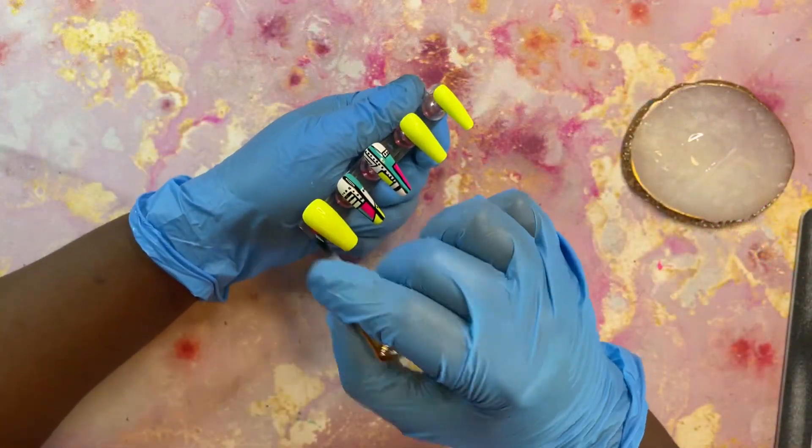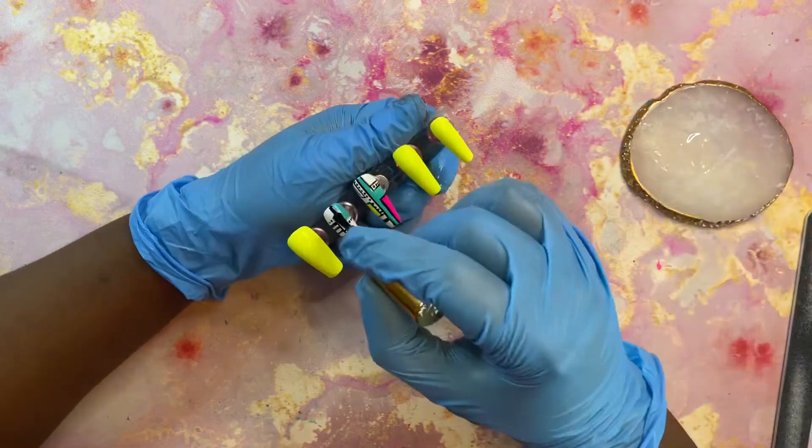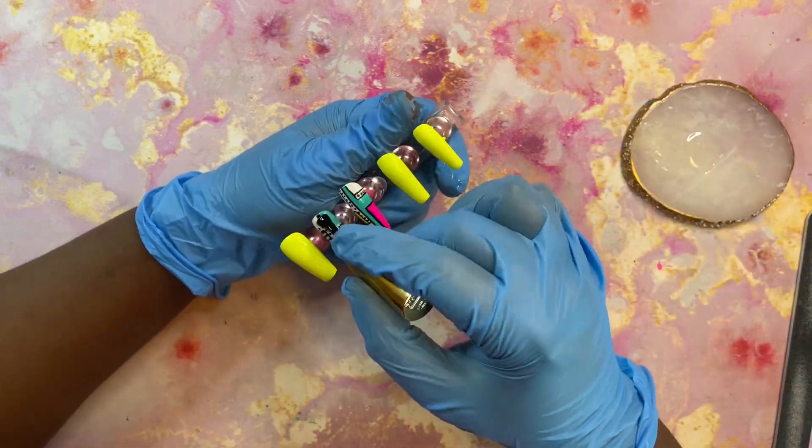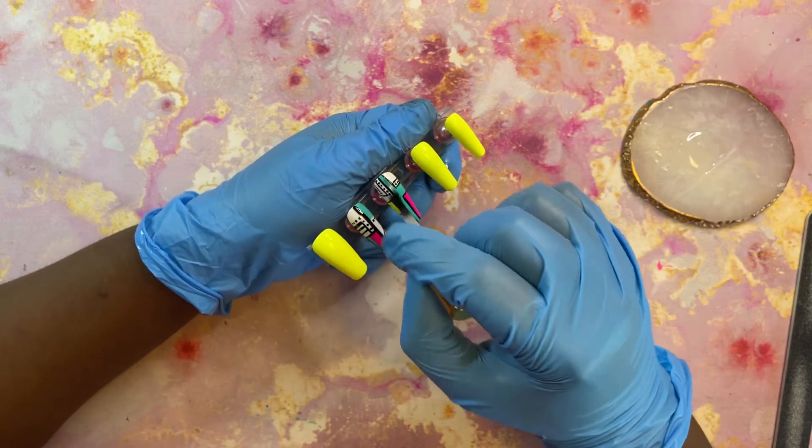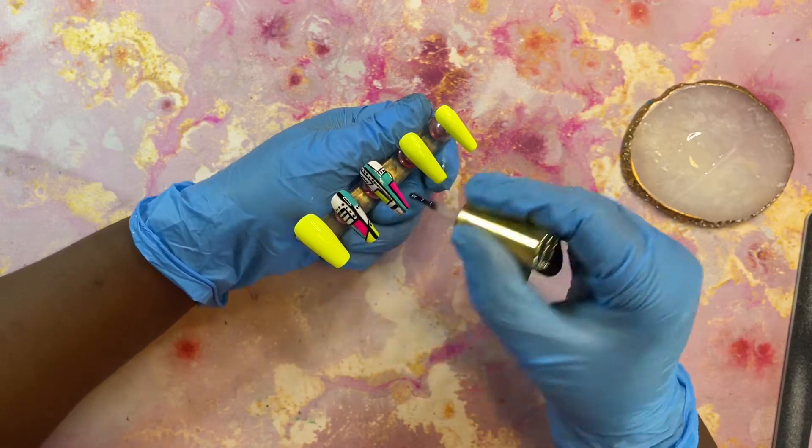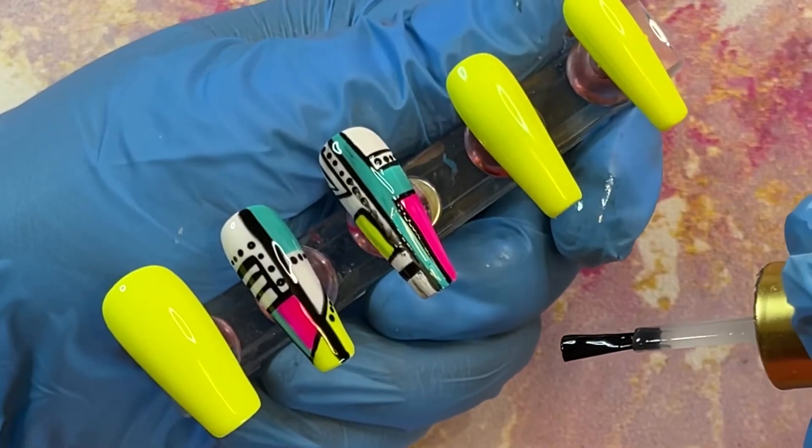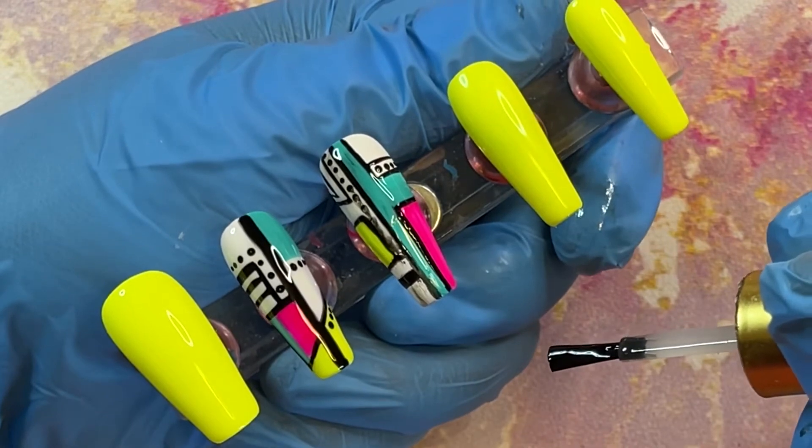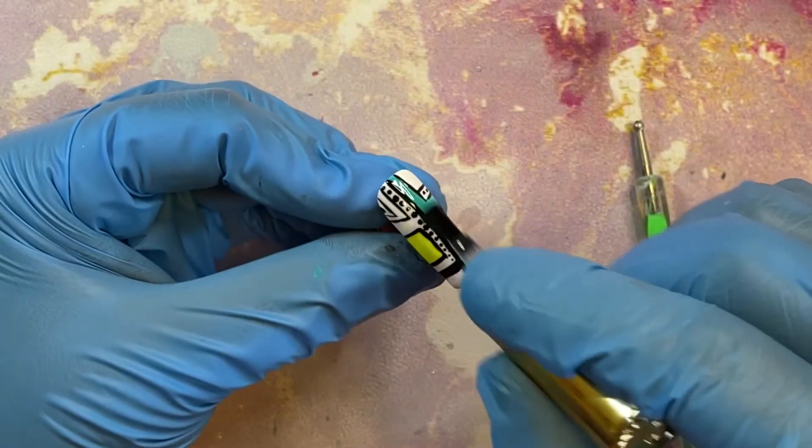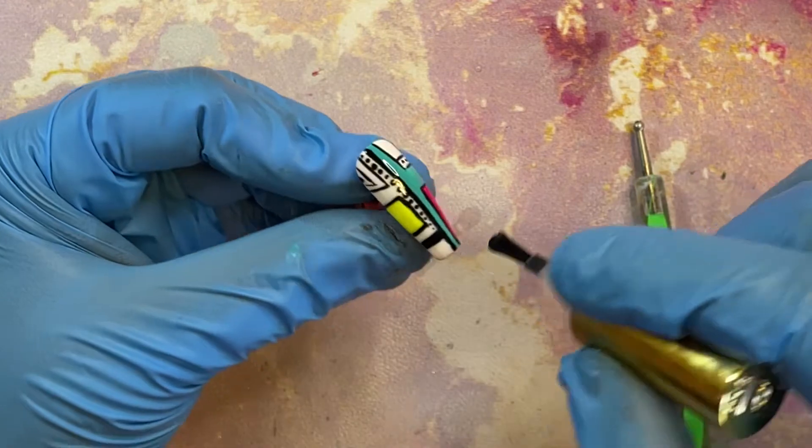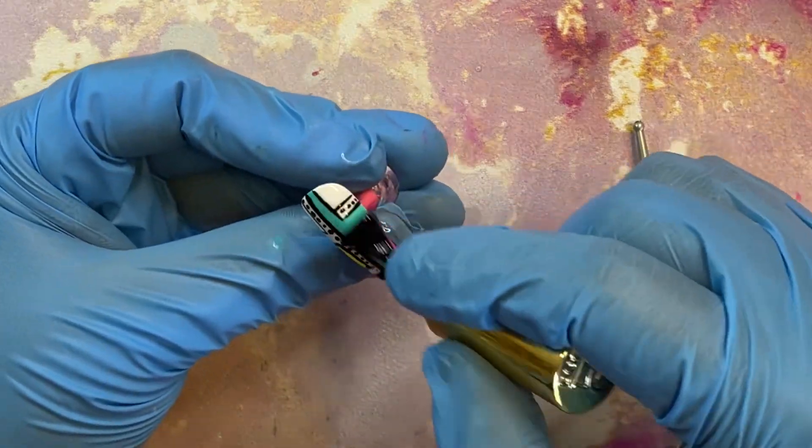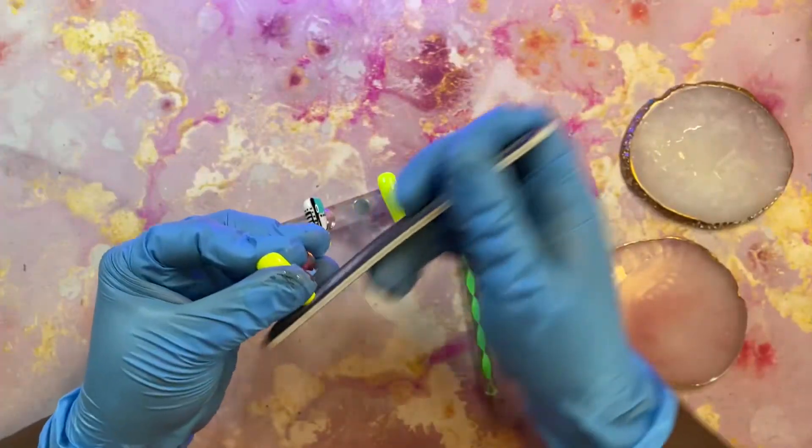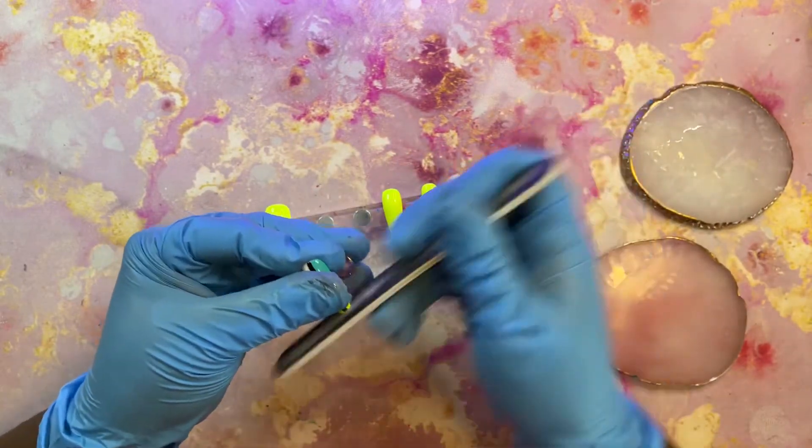So I was almost done with these nails, going in with my top gel polish, and then I smeared my design. But I fixed it - I just got an alcohol prep pad, I wiped it down, and then I went over what was smeared. I did not have to redo the entire nail, thank God.